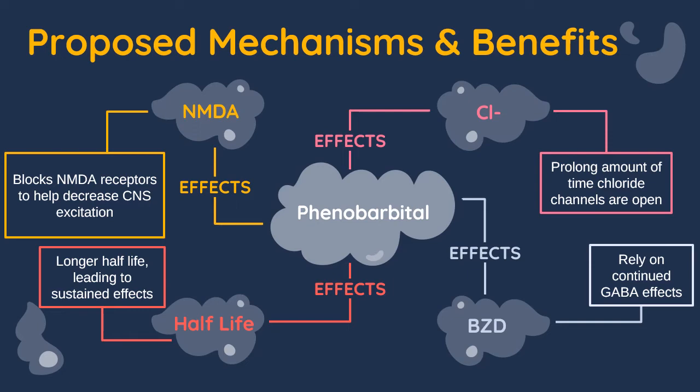This is different from benzodiazepines, which are the mainstay therapy for alcohol withdrawal, as they rely heavily on continued GABA effects. There is discussion that chronic alcohol users may have low endogenous GABA concentrations or changes in GABA receptors, meaning utilizing GABA alone might not work as well. That additional NMDA-blocking mechanism is what makes phenobarbital different from a benzo. Phenobarbital also has a longer half-life of about three days, which can work in our favor as a patient continues through withdrawal symptoms.